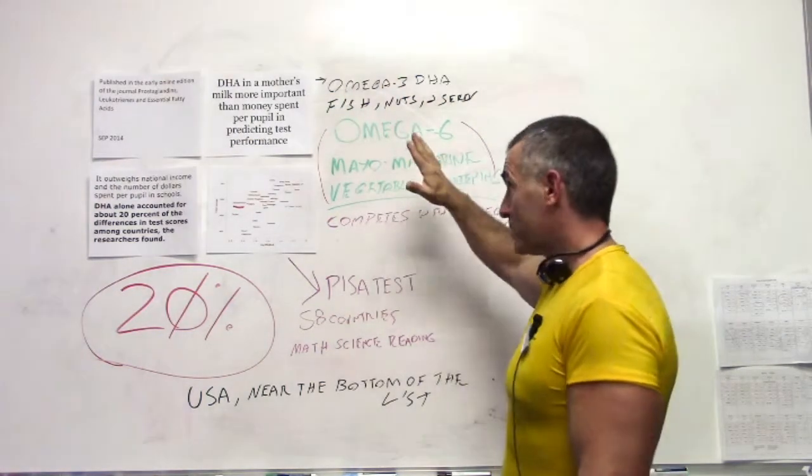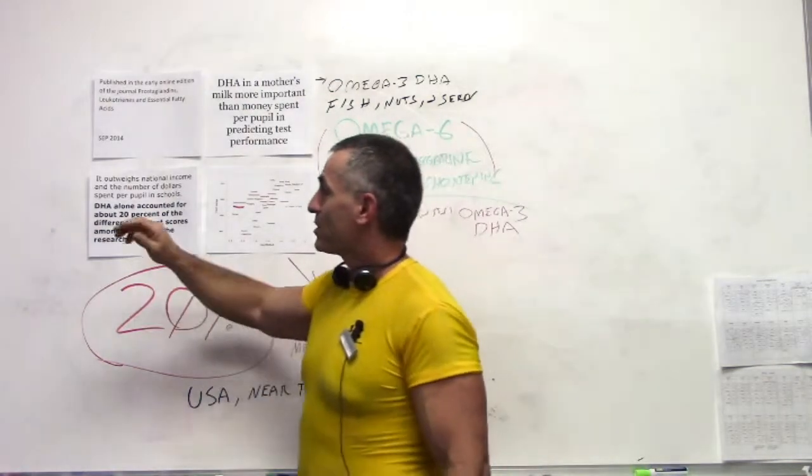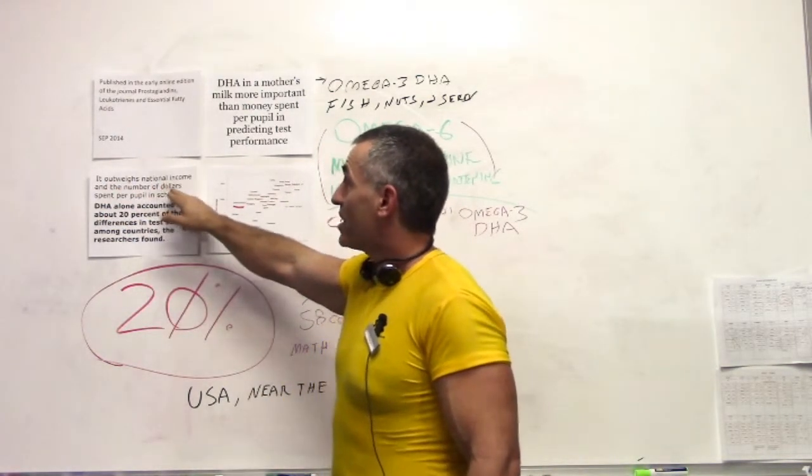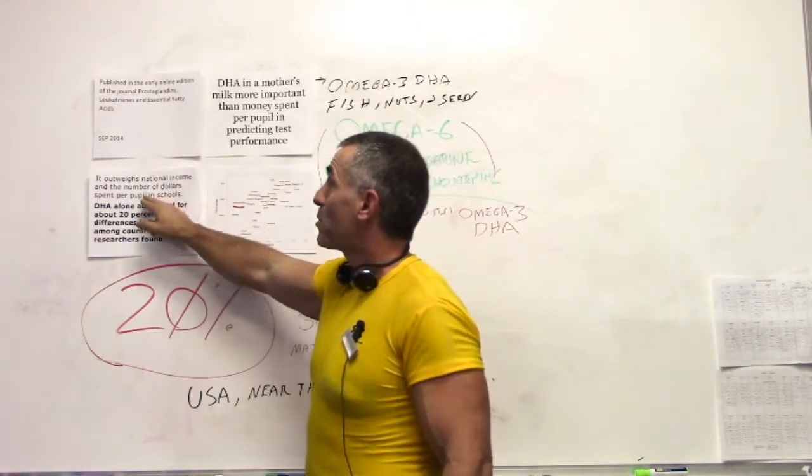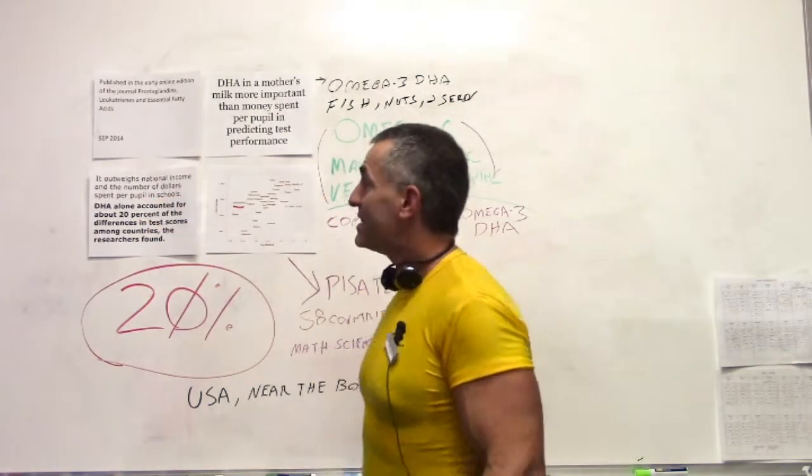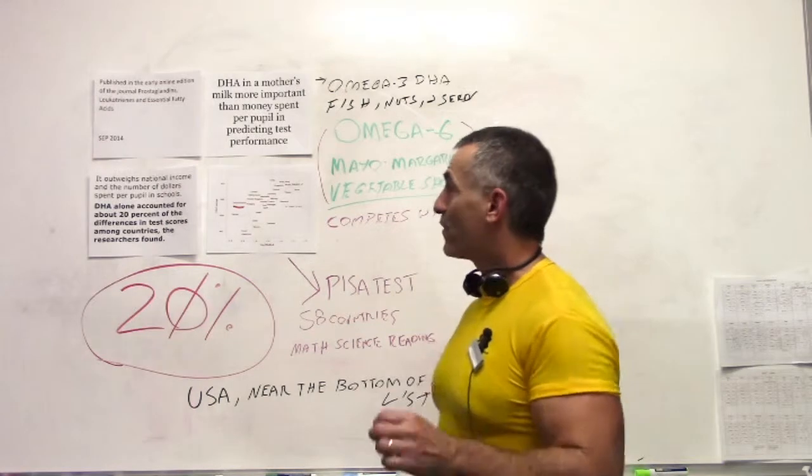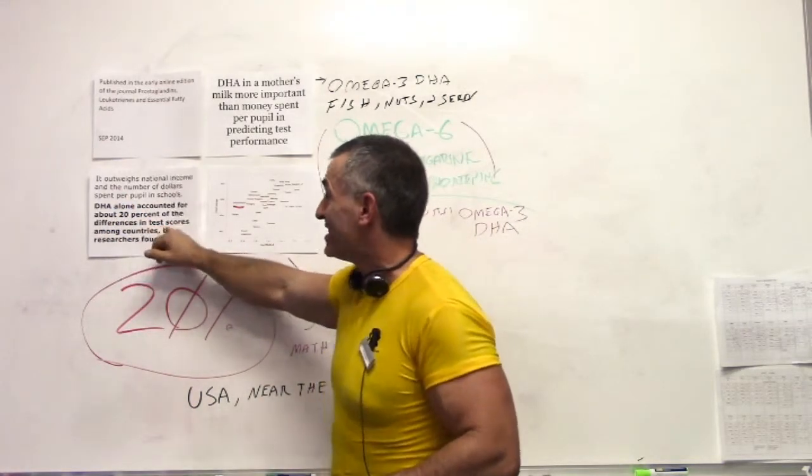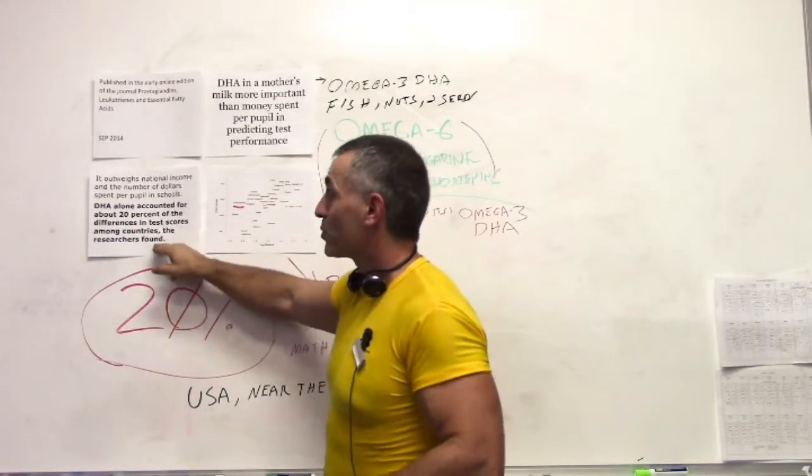How much so? Well, let's put it this way. They came to the conclusion at the end of the study it outweighed the national income and the number of dollars spent per pupil in schools. DHA alone accounted for about 20% in the difference in test scores among countries the researchers found.